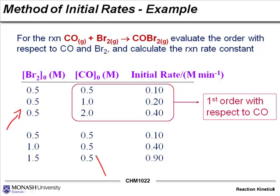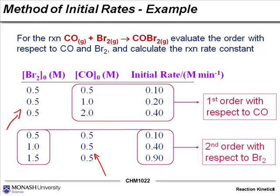The second time we perform the experiment, we hold the concentration of carbon monoxide constant and vary the other reagent, bromine. As we double the concentration of bromine, the rate actually quadruples. As we triple the concentration from the initial concentration, the rate increases nine times, in other words three squared, so it's second order with respect to bromine.